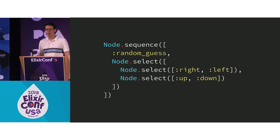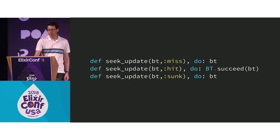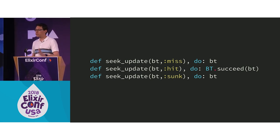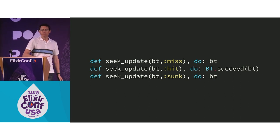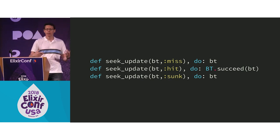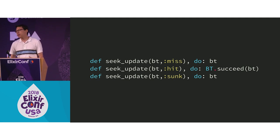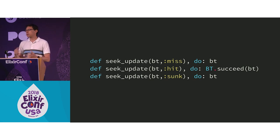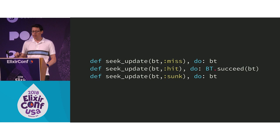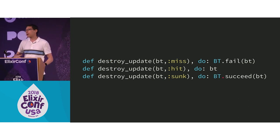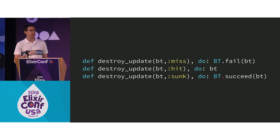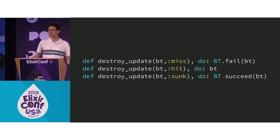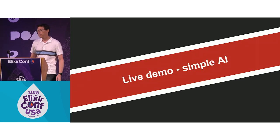This is what that looks like in code using those constructors. There's other code that tracks the board size, which cells have been guessed, and where we're targeting. But this is the code that updates the tree: if we're seeking and miss, just keep doing random guesses so we don't change the tree. If we're doing random guesses and get a hit, succeed so it moves into the destroy part. If we happen to sink a ship, keep going with random guessing. If we're in the destroy branch and miss, that direction isn't working — fail the tree. If we get a hit, that direction is working — keep going. If we sink it, succeed, and it starts over.